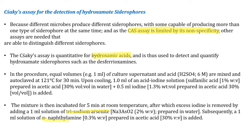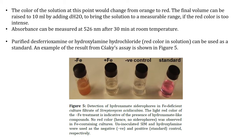Subsequently, 1 ml of alpha-naphthylamine prepared in acetic acid is also added. The color of the solution changes from orange to red. The final volume can be raised to 10 ml by adding distilled water if the red color is too intense — to bring it to a measurable range on your standard graph. Absorbance is measured at 526 nm after 30 minutes at room temperature.